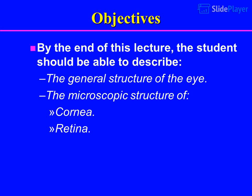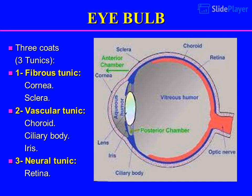Objectives: By the end of this lecture, the student should be able to describe the general structure of the eye and the microscopic structure of the cornea and retina. The eye bulb has three coats, also called three tunics: one fibrous tunic, one vascular tunic, and one neural tunic.